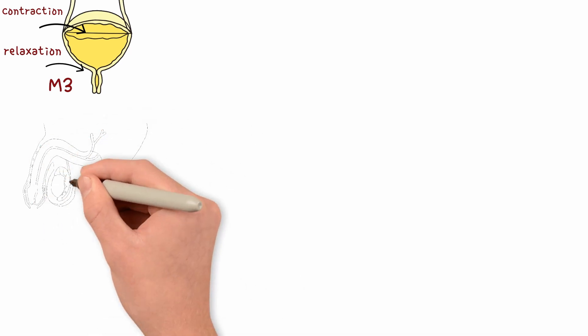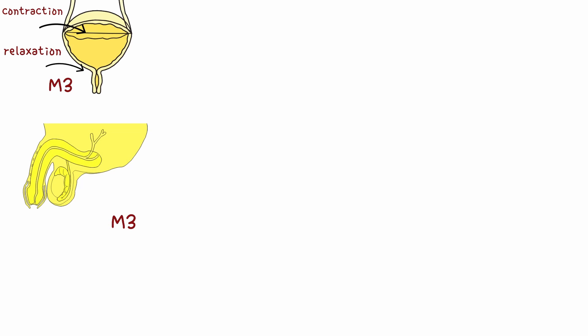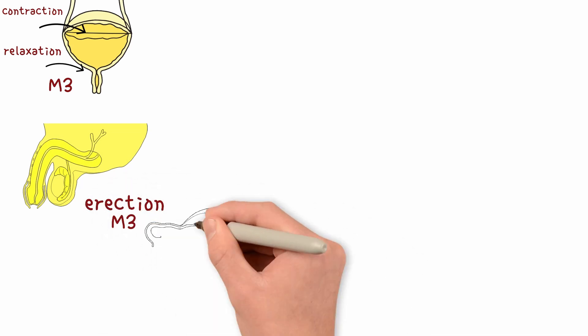The reproductive system. In males, M3 receptors stimulate the release of nitric oxide. This causes vasodilation and erection. Remember, erection is parasympathetic. Ejaculation is sympathetic.